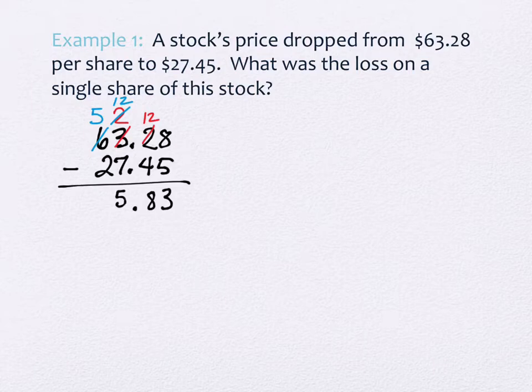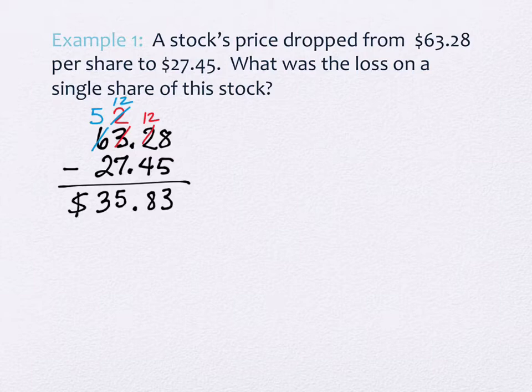Then 5 minus 2 gives 3. Because this is a word problem with context and units, you include those — in this case a dollar sign — so the answer is $35.83. We are really, truly regrouping money on that problem.